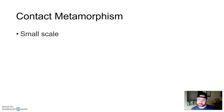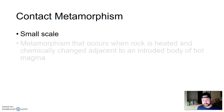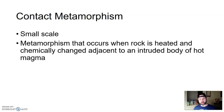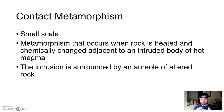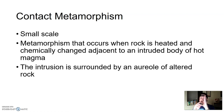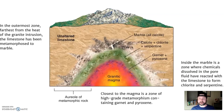Contact metamorphism typically happens at a very small scale. It's metamorphism that occurs when rock is heated and chemically changed adjacent to an intruded body of hot magma. The intrusion is surrounded by what's called an aureole of altered rock. So contact metamorphism is when you have magma cutting through existing layers of rock — these protoliths — and the magma is so hot it's applying heat to the rocks right around it, altering and changing them. That's contact metamorphism because these protoliths are in contact with magma.